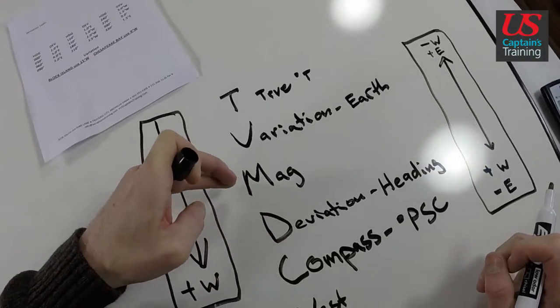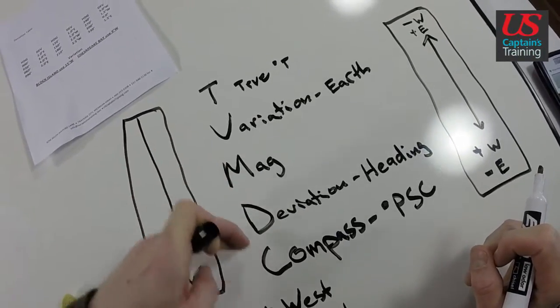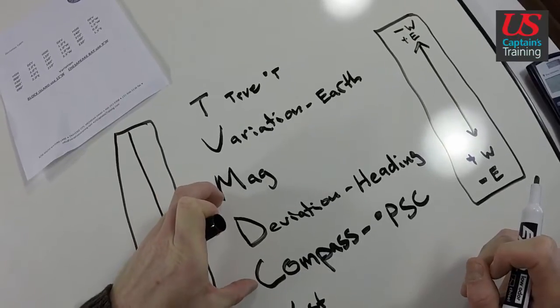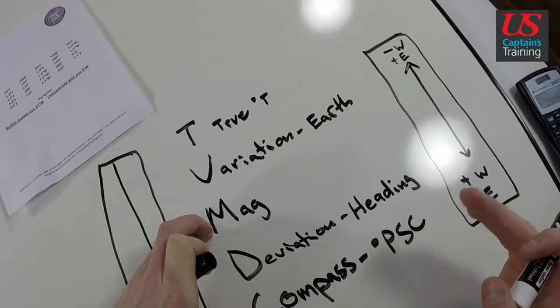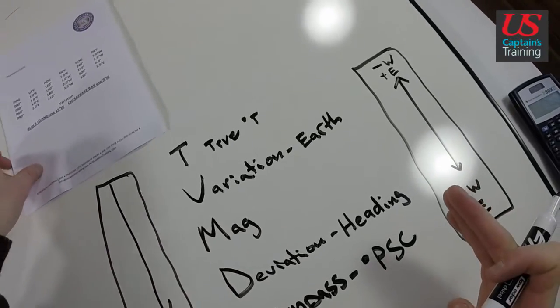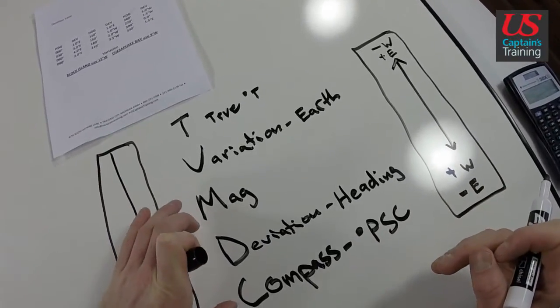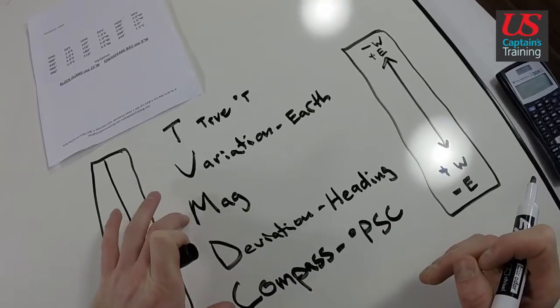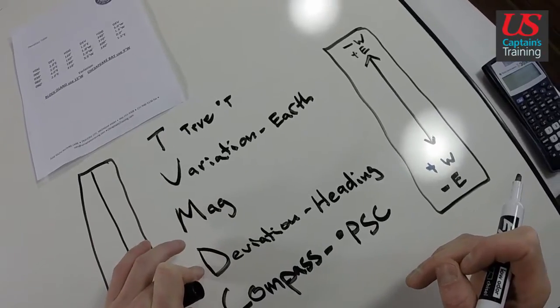And we can take it from either magnetic or compass. They're both going to be close enough. They'll never be more than four degrees away from each other for any of these problems. And that four degrees is just fine. We can take it from magnetic or compass and get deviation from it.